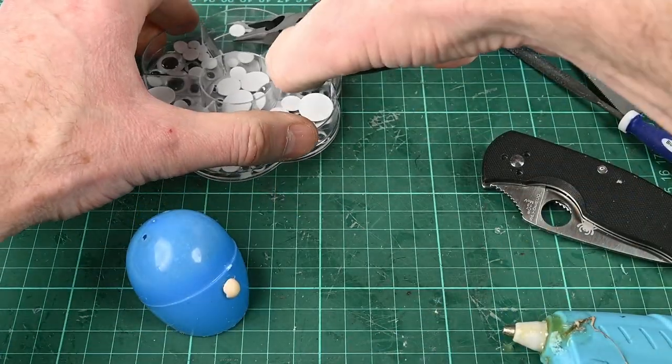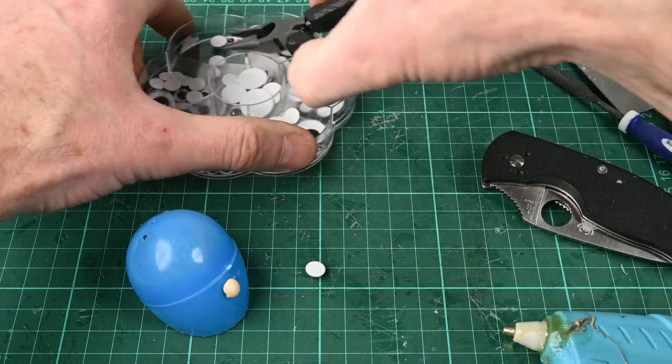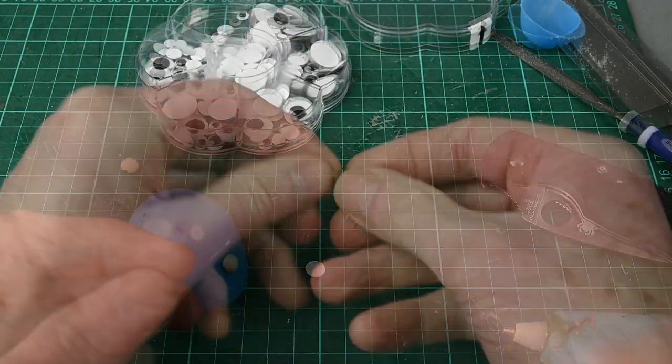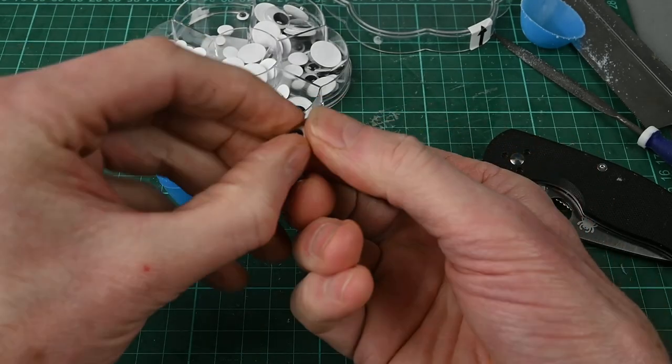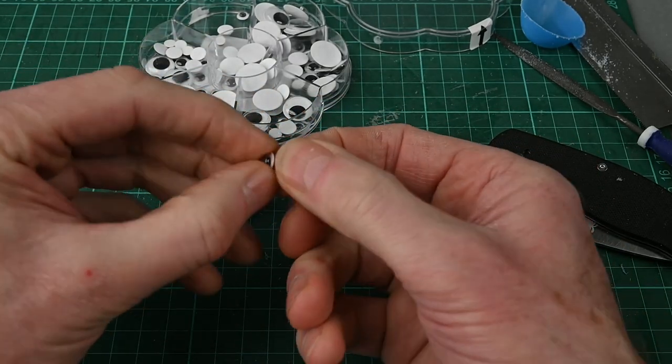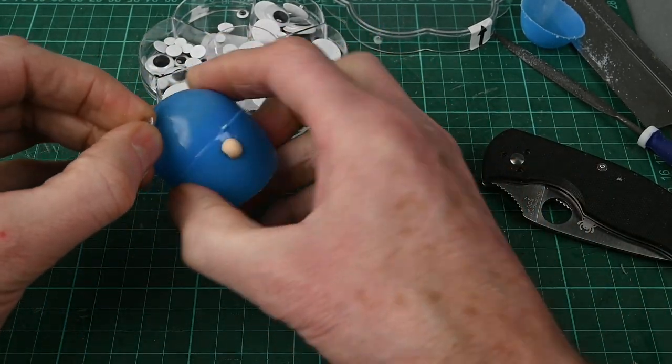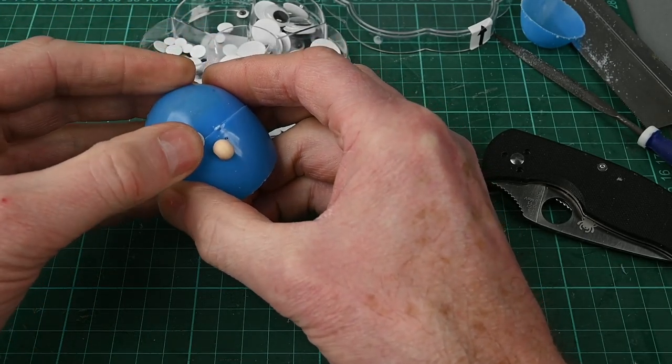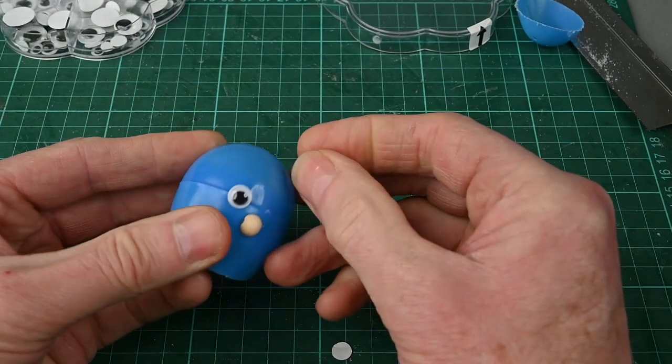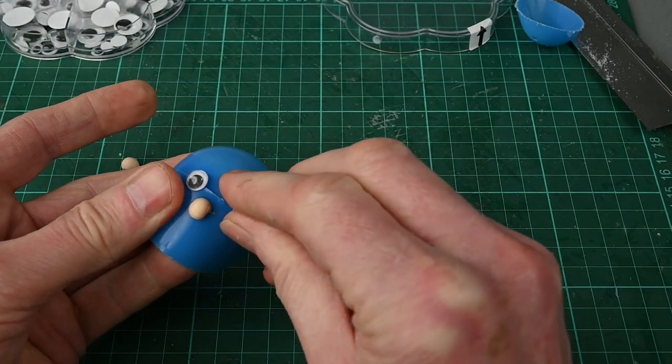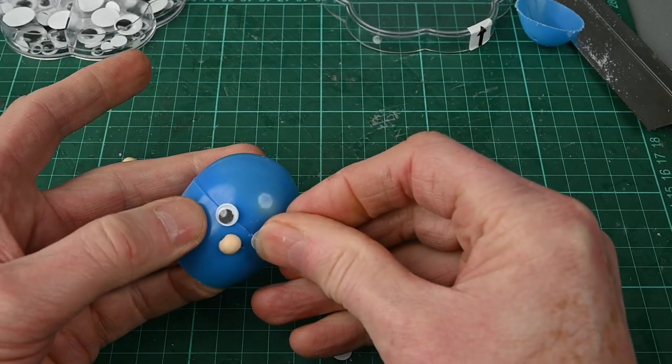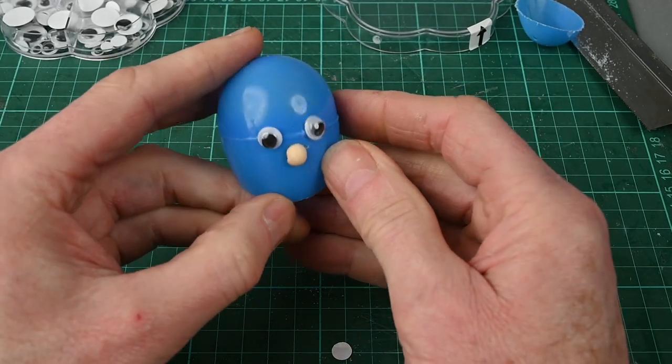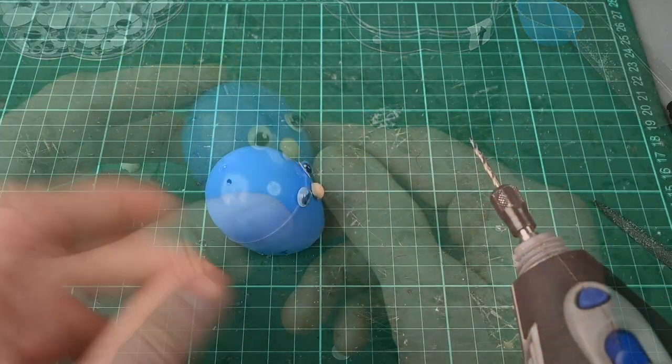Googly eyes always make everything look better with googly eyes. So pick a couple of googly eyes that are the same size, peel off the backing paper off the back, and stick the googly eyes into place. And all of a sudden it starts to look more like a character. You've got a nose and some eyes and the roundness of the head definitely looks like a character.